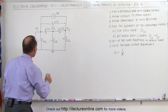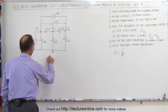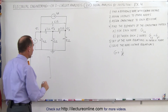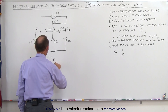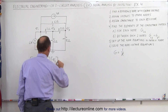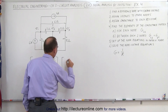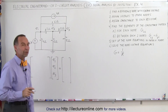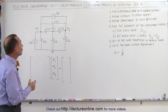What that means is we need to come up with a matrix — this will be a three by three matrix because there are three nodes. We multiply that times the voltage matrix V1, V2, and V3, then set it equal to the current matrix, and that will allow us to solve for the unknown voltages V1, V2, and V3. The current matrix is very easy to find.